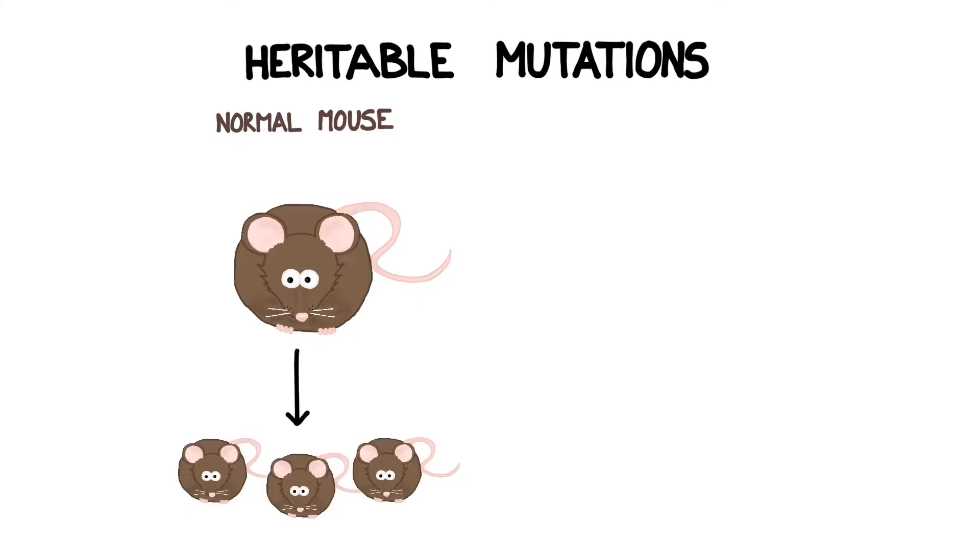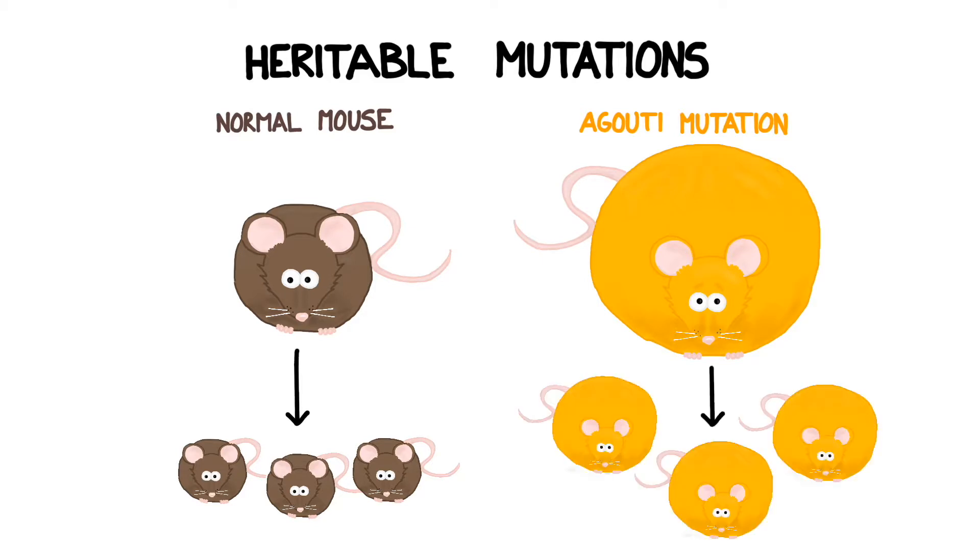In this case, mice with a normal brown coat tend to produce offspring that have the same coat. Some mice have a mutation on the agouti gene that makes them yellow and obese. These mice will almost certainly pass this mutation on to their offspring.